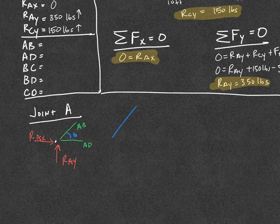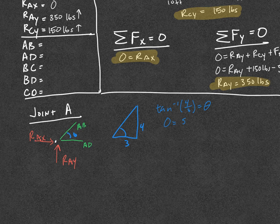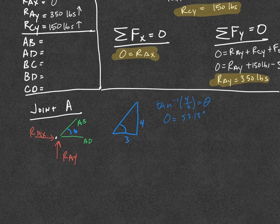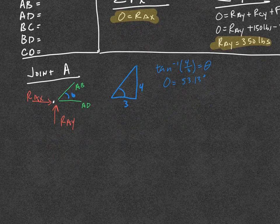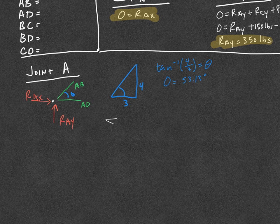Now I need to solve for the angle that I didn't solve for in the initial free body diagram. I know distances of three and four, so I'm going to use inverse tangent of opposite over adjacent — four over three — to find theta equals 53.13 degrees. When solving internal forces, I'm looking at only a single point, so there are no moments — I only need to consider sum of forces in X and sum of forces in Y.